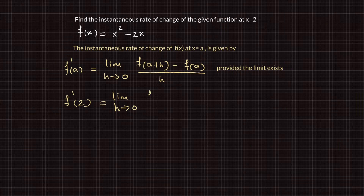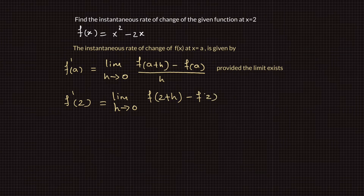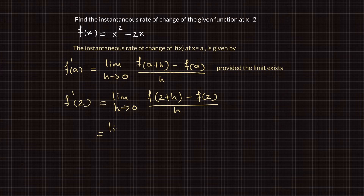Since we want to find the instantaneous rate of change at x equals 2, f prime of 2 is equal to the limit as h goes to 0 of f of 2 plus h minus f of 2 divided by h.